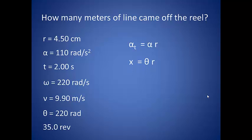Just like our angular acceleration and linear acceleration are proportional, our linear distance is proportional to our angular distance. And this proportionality has to do with the radius. The angular distance multiplied by the radius gives us 9.9 meters of fishing line.